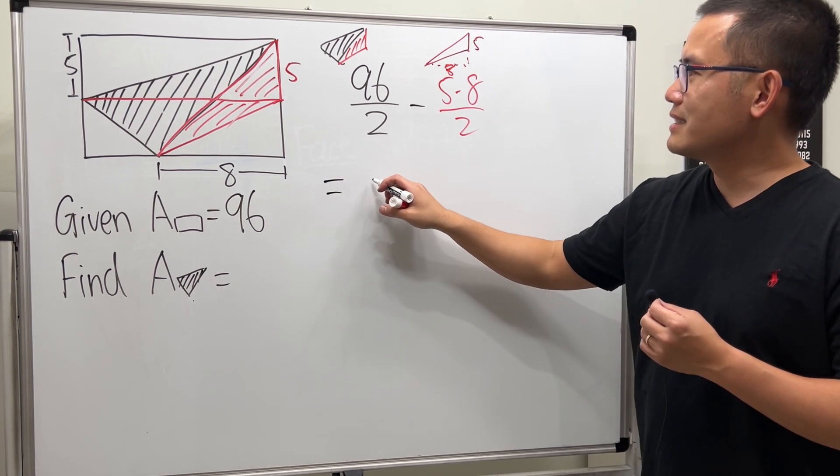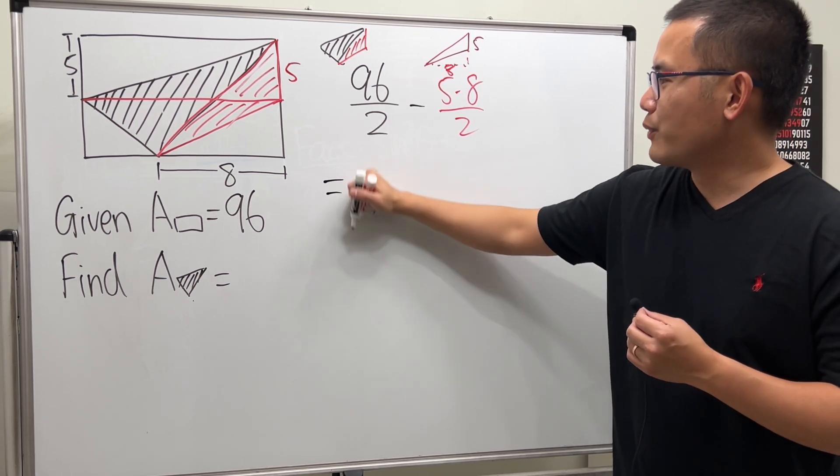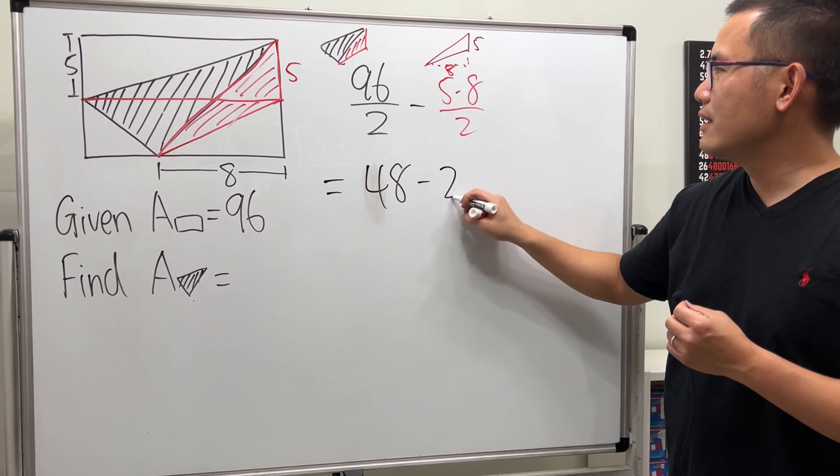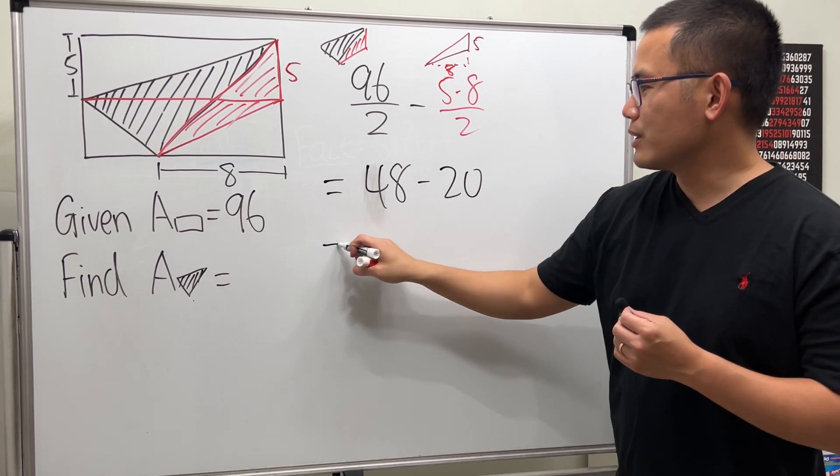That's 48 minus 20, right? 40 divided by 2. So all together we get 28.